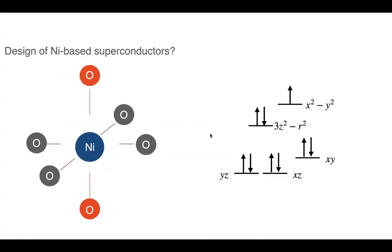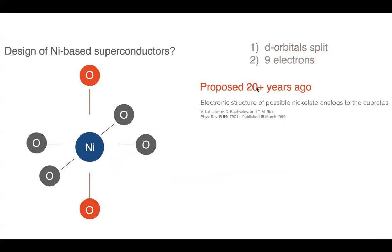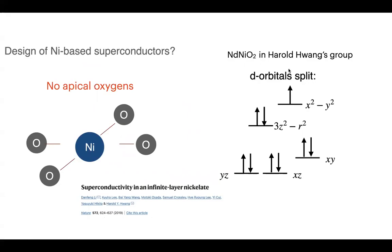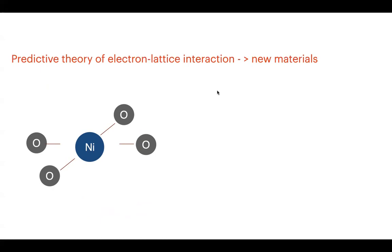Starting from the idea that cuprate physics is dominated by one band, people thought for a long time about designing nickel-based superconductors. The basic question was: how do we split the d orbitals in a particular way and have nine electrons on nickel? This was proposed over 20 years ago and was ultimately realized in Harold Hwang's group by removing the apical oxygens from a rare-earth nickelate — though 'just' removing oxygens is actually a very complicated process.